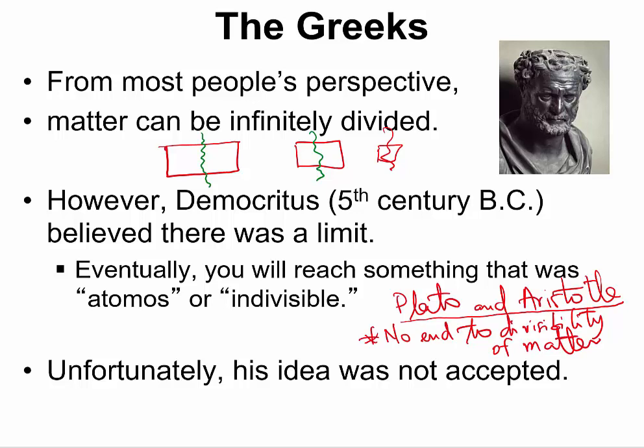There was another school of thought led by a little-known philosopher — his name was Democritus. Democritus believed that there will reach a point at which a piece of matter could no longer be divided. In the Greek word, that is called atomos. Atomos means indivisible. So Democritus was of the opinion that atomos exists, but because he was not as popular and as well respected as Plato and Aristotle, his idea was not accepted.